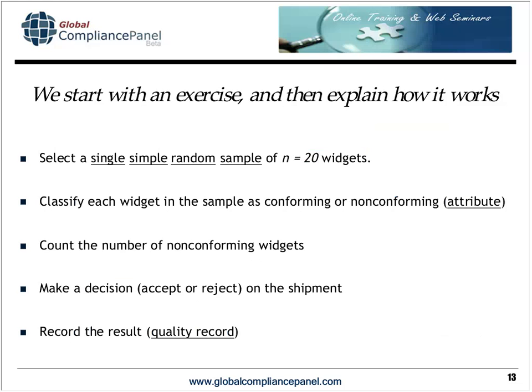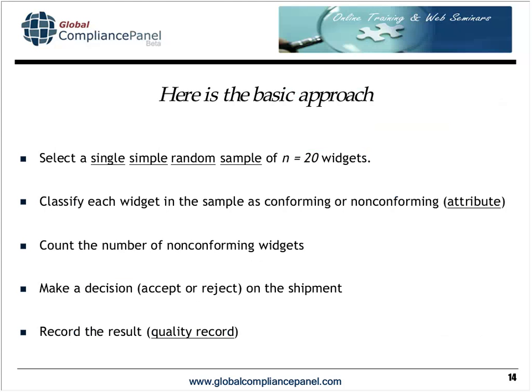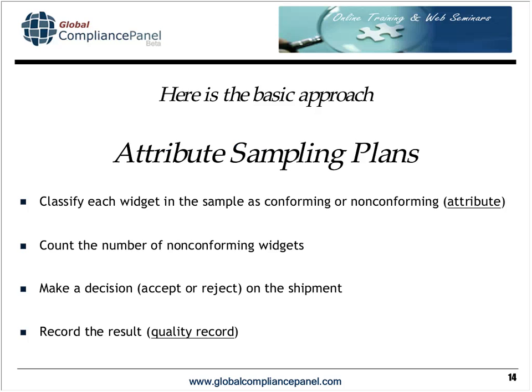Here's our basic approach: select a single, simple random sample of 20 widgets, and classify each widget as conforming or nonconforming. If we take measurements, we convert from variables to the attributes of conforming and nonconforming. Count the number of nonconforming widgets and make the decision to accept or reject the shipment. Record the results — lot size, number of items in the sample, the decision rules, how many nonconforming items were found, and the outcome. These are standard things to include in a quality record.